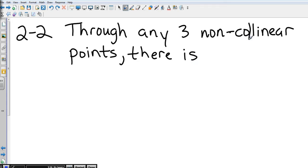There is exactly one plane. 2-2: through any three non-collinear points there is exactly one plane. Now could two of the points be collinear? Yeah.